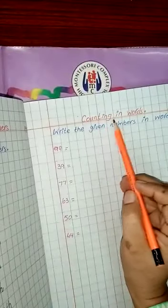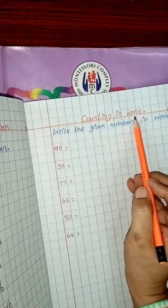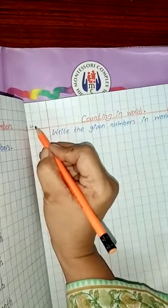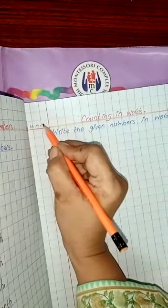Ab hum aate hain copy par. Ye dekhiye, counting in words likhiye red line ke upar. Aur yahan hum date dalenge aaj ki. 10/7.